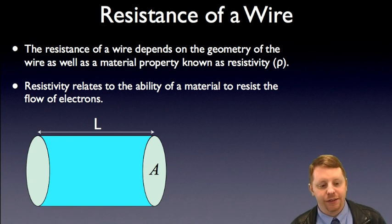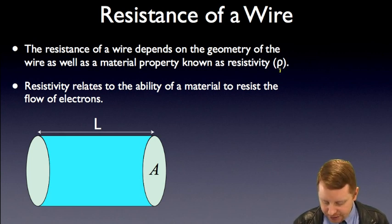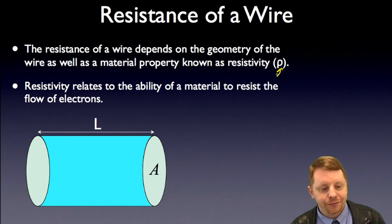If we want to talk about the resistance of a wire, well, that depends on the geometry of the wire, as well as a material property known as resistivity, which is given the Greek letter rho. That's usually measured in ohm meters.